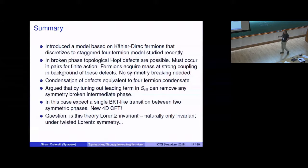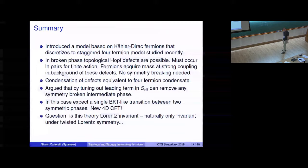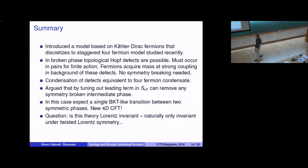So let me summarize. I introduce this model based on Kaler-Dirac fermions. It discretizes to these staggered four-fermion models that have been studied recently. Once this interaction is strong enough, I expect I can have topological field configurations in principle play a role. They have to occur in pairs because I need to have finite action. Fermions, nevertheless, propagating in that background pick up a mass. But I don't need any symmetry breaking to generate that mass. It's entirely a function of propagation in this non-trivial vacuum state. I've argued that if I tune out the leading term in the effective action by moving to a more general Higgs-Yukawa model and then tuning in that additional coupling, I should be able to remove this symmetry-broken intermediate phase. Numerically, it's already extremely narrow. In G, it's less than 0.1. So it's a very narrow phase. It's hard to see, in fact, numerically.